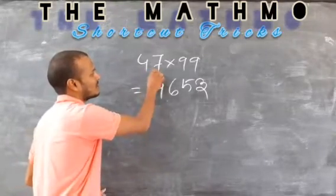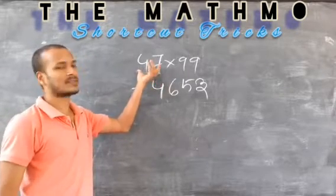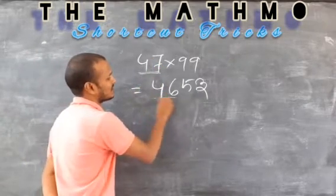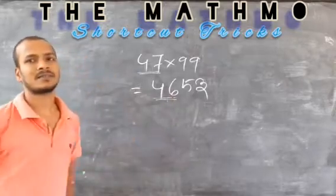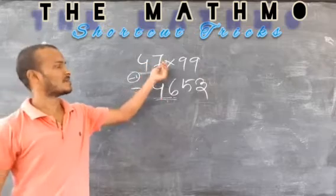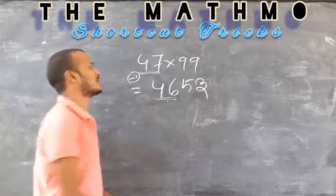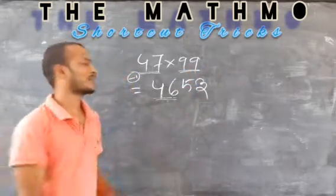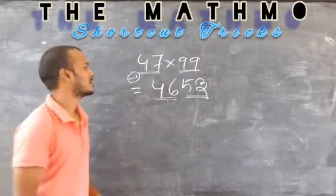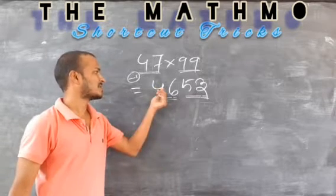First of all, you have to subtract 1 from the first number, that is 47, and it becomes 46. You have to subtract 1 from the last digit. So it is 46. And then for the remaining two digits, you have to put two digits here. And how to put those two digits? You have to look at the corresponding digits.